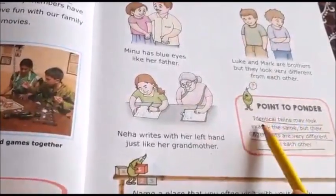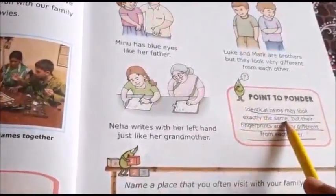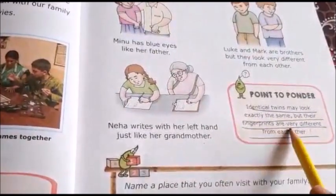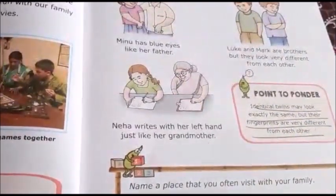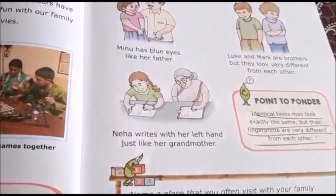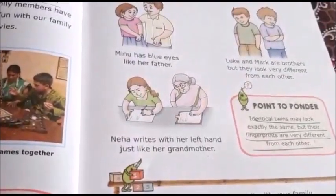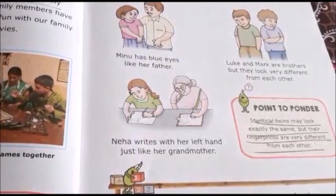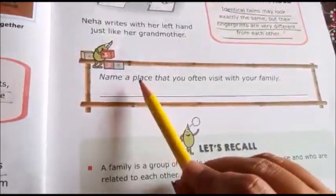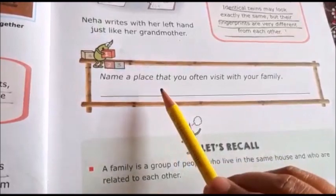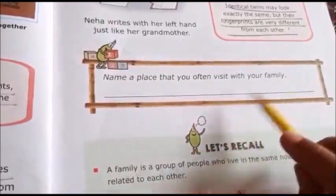Points to ponder: Identical twins may look exactly the same, but their fingerprints are very different from each other — their fingerprints don't match. Here is one for you: you can write the name of a place where you often visit with your family members.